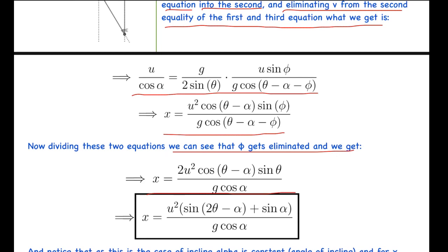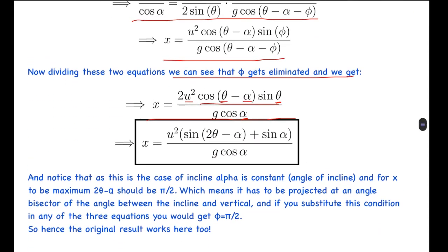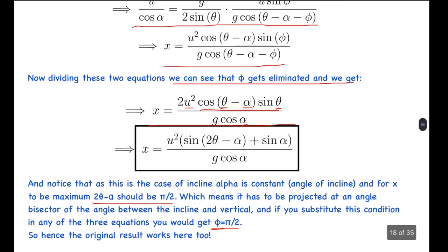Dividing the two equations causes sin(φ) and cos(θ − α − φ) to cancel, and we get x = 2u²·cos(θ − α)·sin(θ) / (g·cos(α)). Now using the identity 2·sin(a)·cos(b) = sin(a+b) + sin(a−b), the expression simplifies so that only one variable term remains. For x to be maximum, 2θ − α = π/2, giving θ = (π/2 + α)/2. Substituting back, we get φ = π/2. These two results — phi equals π/2 in both cases — are thus proved. This is a very useful result for maximum-range projectile problems.